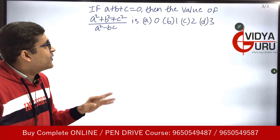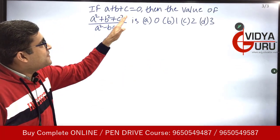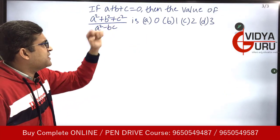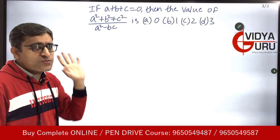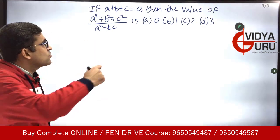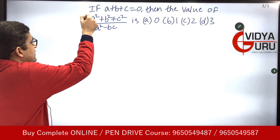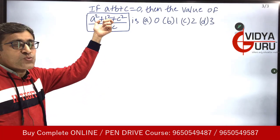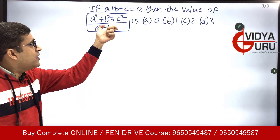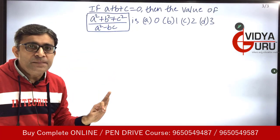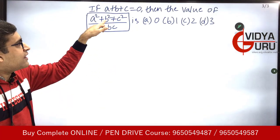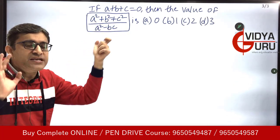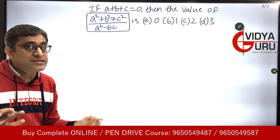Let's see the next question: a + b + c = 0. We have to find the value of (a² + b² + c²) / (a² - bc). We do not have a² + b² + c² directly; we only have the value of a + b + c, so we need to derive that expression.